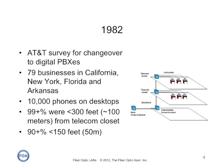That year, AT&T, concerned with what was going to happen when they changed over from analog — or POTS — telephones to digital phones and digital PBXs, did a survey of their customers. They wanted to know what the architecture for a phone system should be. They surveyed a total of 79 businesses in California, New York, Florida, and Arkansas. Those customers had 10,000 phones on desktops total — that's about 100 per customer.